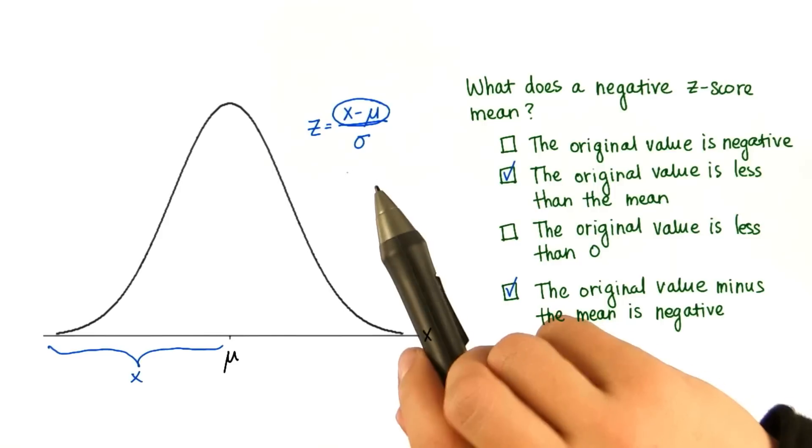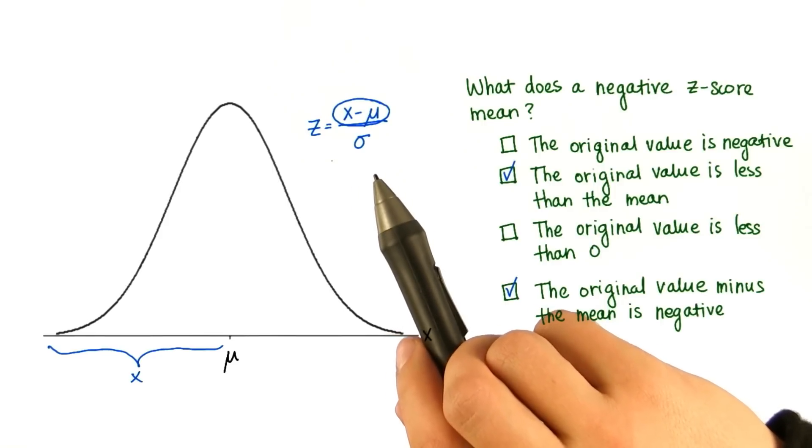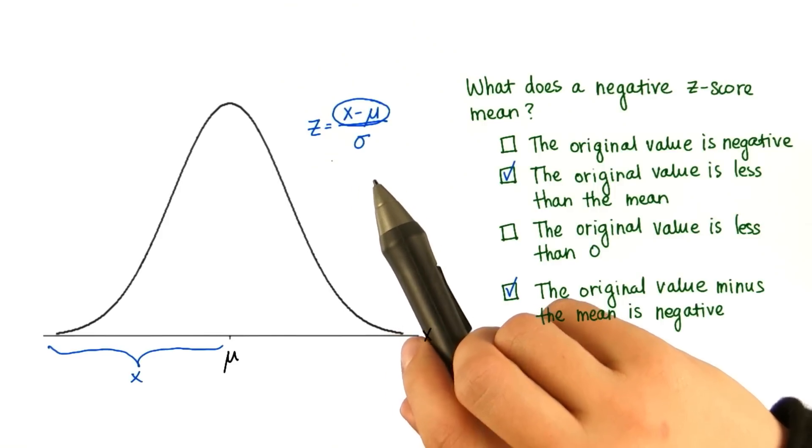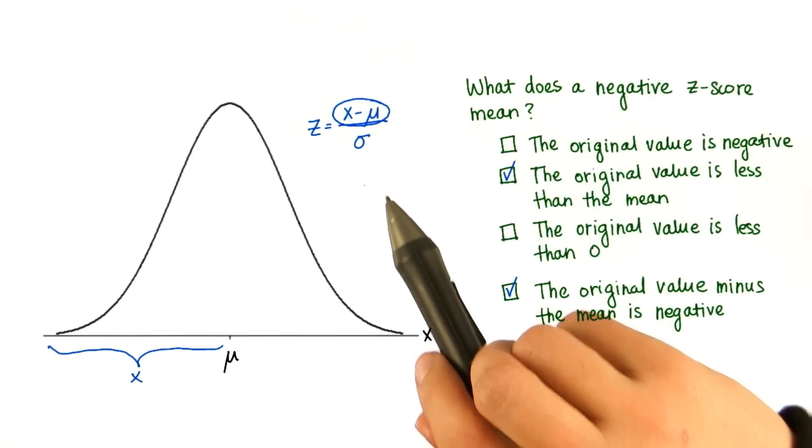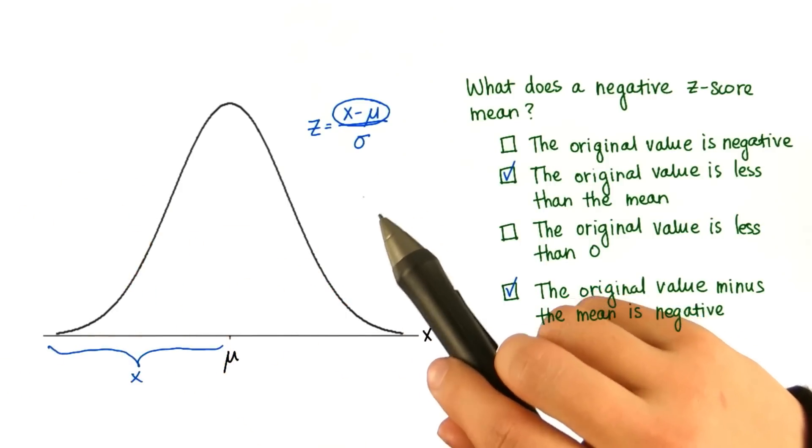Just to review, remember when we calculated standard deviation? We squared all the deviations, so all the deviations are then positive, because if you square anything negative or positive, you get a positive number.